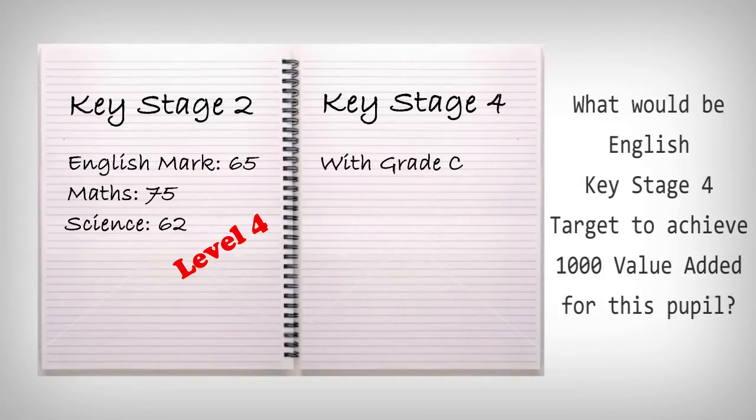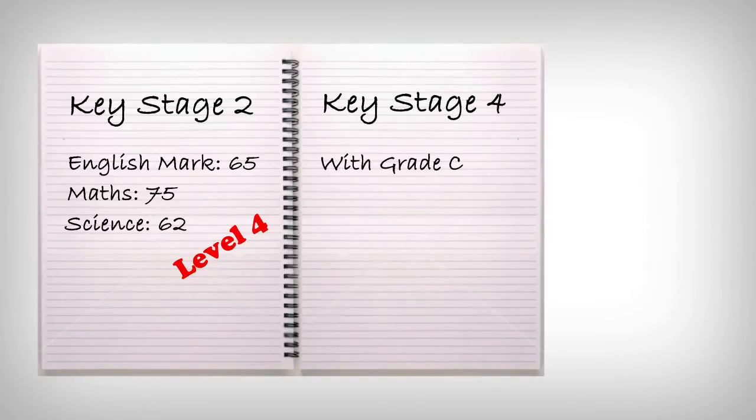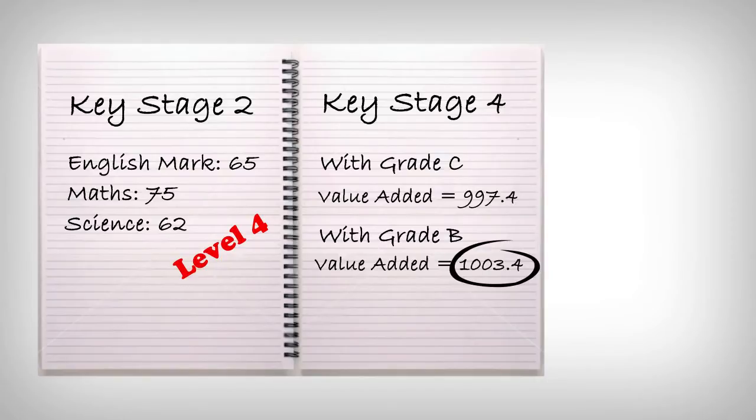Do you think Grade C is enough to achieve a thousand value added score for this pupil? Actually, it's not. Value added will be 997.4. This pupil needs to get Grade B, then the value added would be 1003.4 based on national averages.